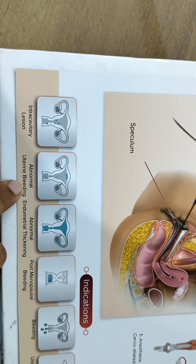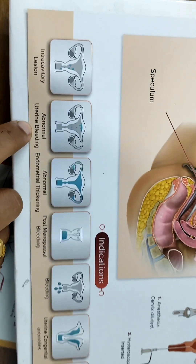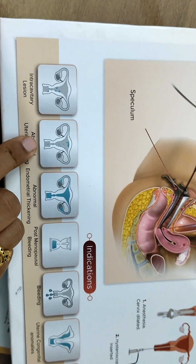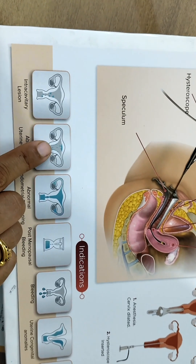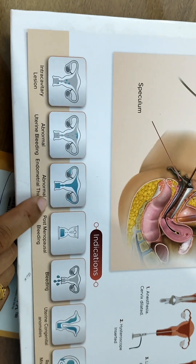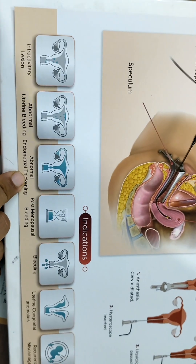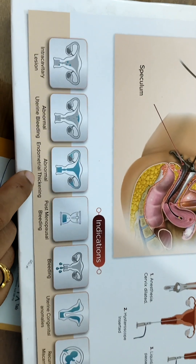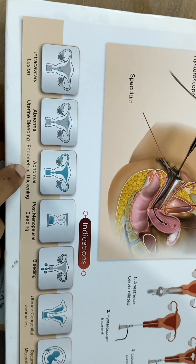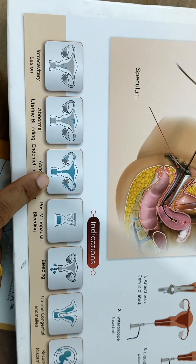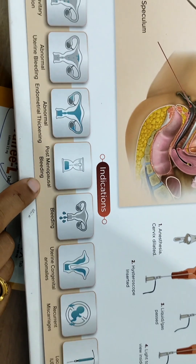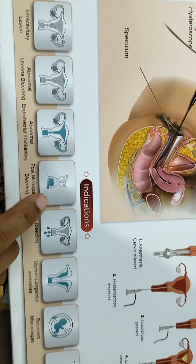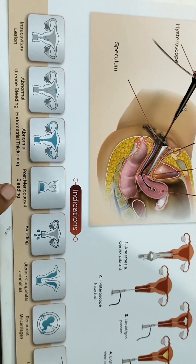The second indication is any abnormal uterine bleeding. If the patient is not responding to medicines, then a diagnostic plus therapeutic hysteroscopy for removing the lesion can be done. Any abnormal endometrial thickening is a special case — particularly for perimenopausal females around 40-plus years of age who have endometrial thickness more than 5 to 8 mm, are continuously bleeding, or have ultrasound findings suggestive of cystic endometrial hyperplasia. In those cases, a diagnostic hysteroscopy with guided biopsy is indicated.